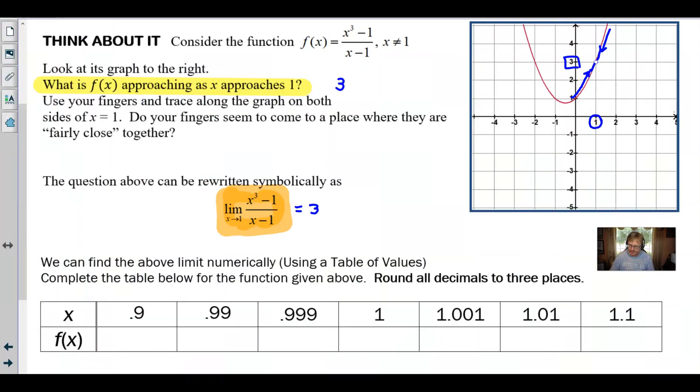Let's go ahead and fill in our table. And here we are with our table. And if I enter those points the way that they appeared on the calculator, I would have 2.71, 2.970 or 97, we got 2.997 right here. This is the one that we knew was undefined. You could also abbreviate that UND.